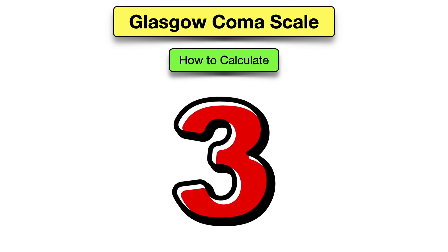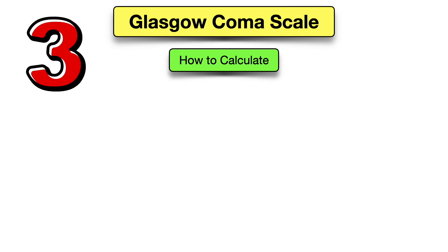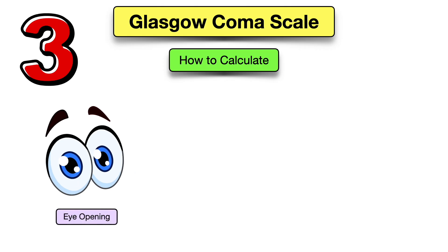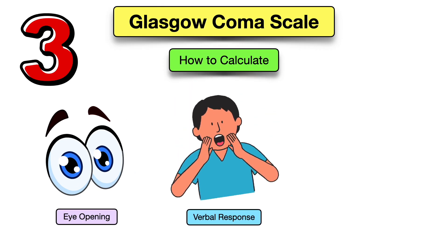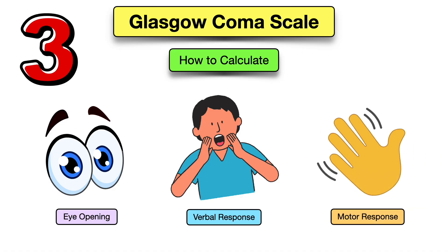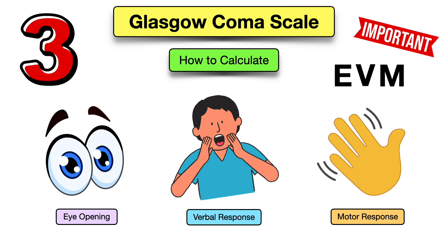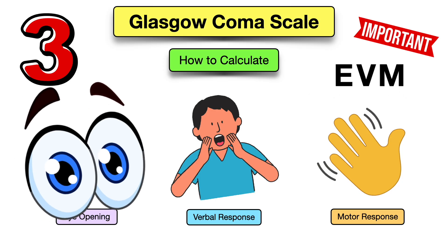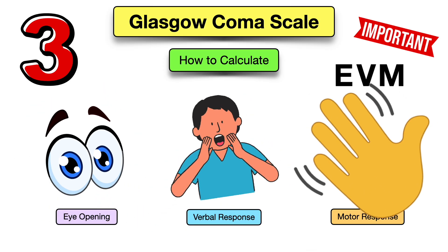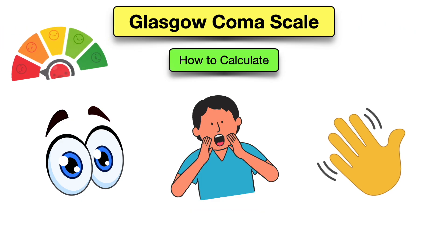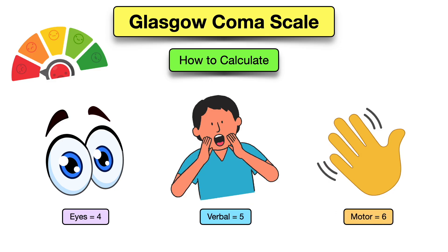To calculate a patient's GCS score, there are three parameters to measure. First is the patient's eye opening response. Second is the patient's verbal response. And finally the patient's motor response. You can remember this with the abbreviation EVM: eyes, verbal, and motor. The max score for eyes is four points, the max score for verbal is five, and the max score for motor is six.